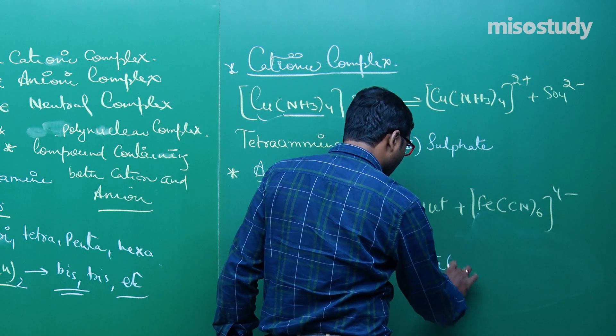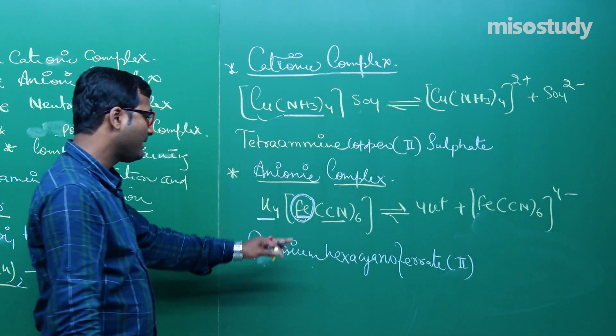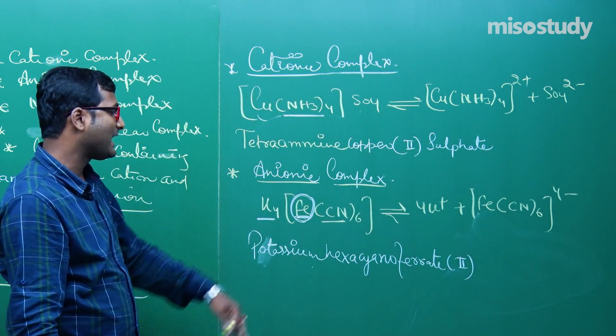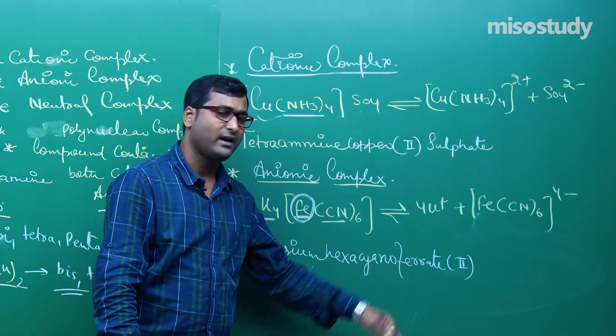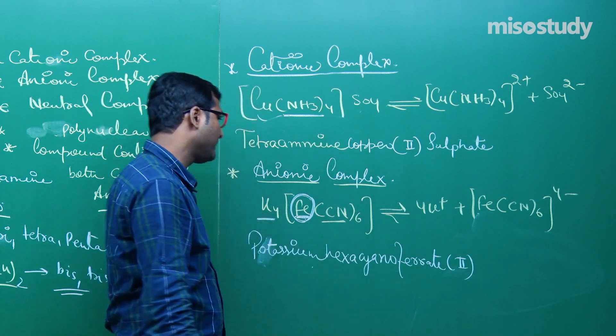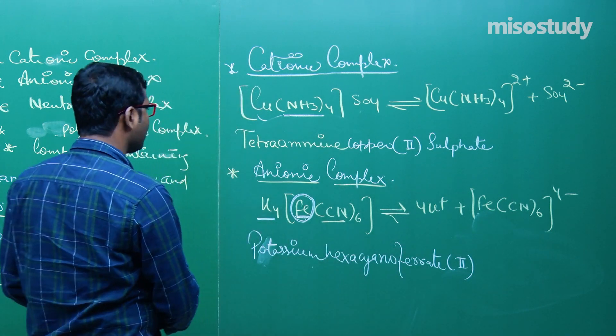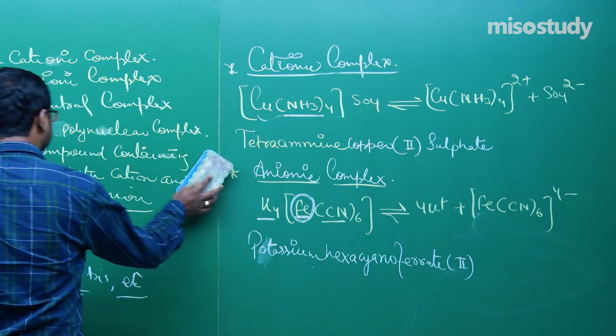So we write: potassium hexacyano ferrate. The oxidation state of iron is +2, so the full name is potassium hexacyanoferrate(II). This is the case of anionic complex.